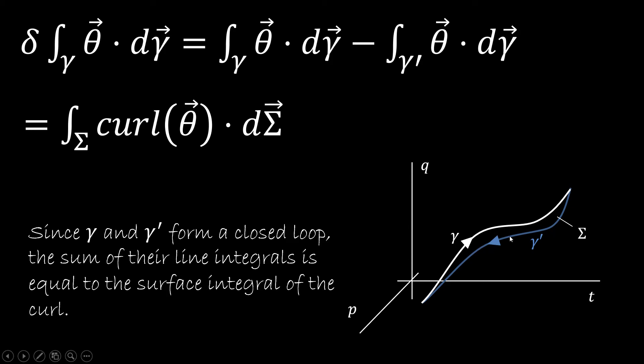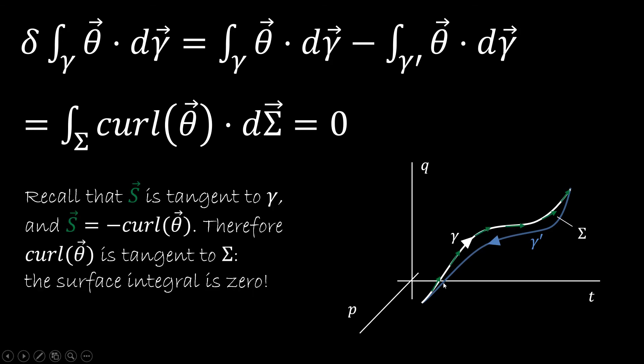the surface that is between the original trajectory and the small variation. But now remember that S is tangent to gamma by construction because it's telling us where the states are going. And also S is minus the curve of theta. Therefore, the curve of theta is tangent to sigma. But if the curve of theta is tangent to sigma,